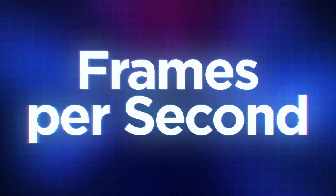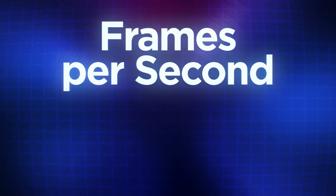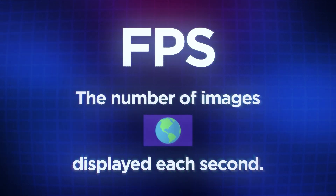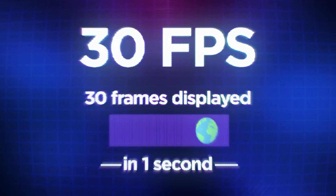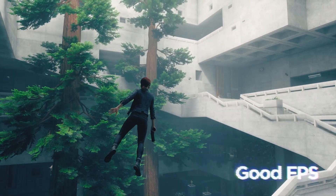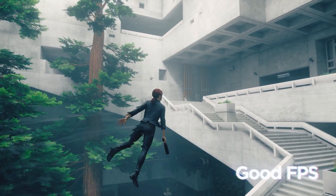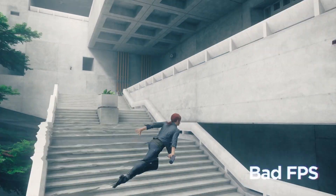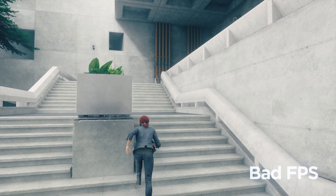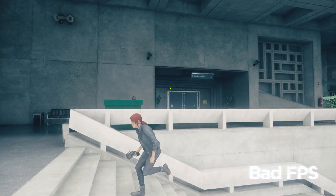Game performance is typically measured in frames per second, or FPS for short. FPS represents the number of consecutive images displayed on your screen every second. For example, 30 FPS means that the screen displays 30 frames every second. A game performing with a high FPS will look and feel smooth, but if the FPS drops too low, game animations, player movement and interactions can become sluggish and choppy.